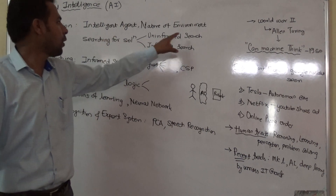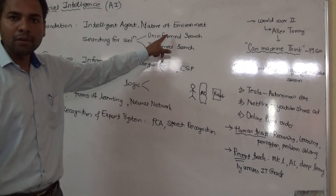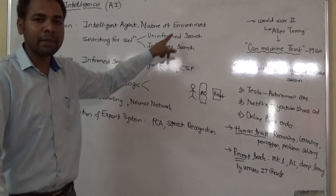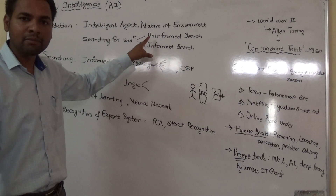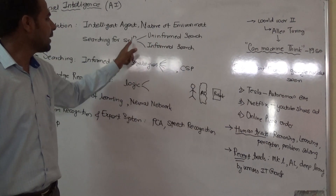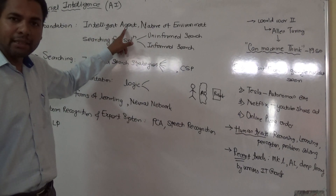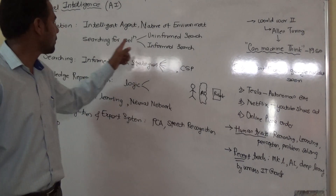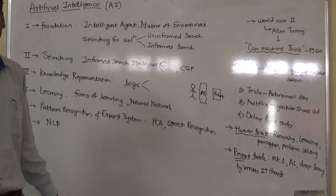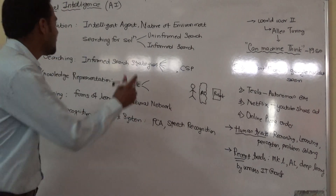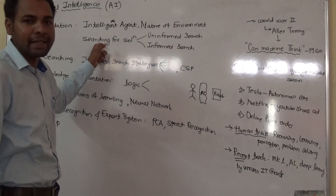Uninformed search means the agent does not have additional knowledge of the environment — no extra information — which is why it is called uninformed search. Informed search means that apart from domain knowledge, the intelligent agent has some additional information to find the solution, which is why such techniques are called informed search. So from unit one you need to remember: fundamentals of intelligent agents, environment, and searching strategies.